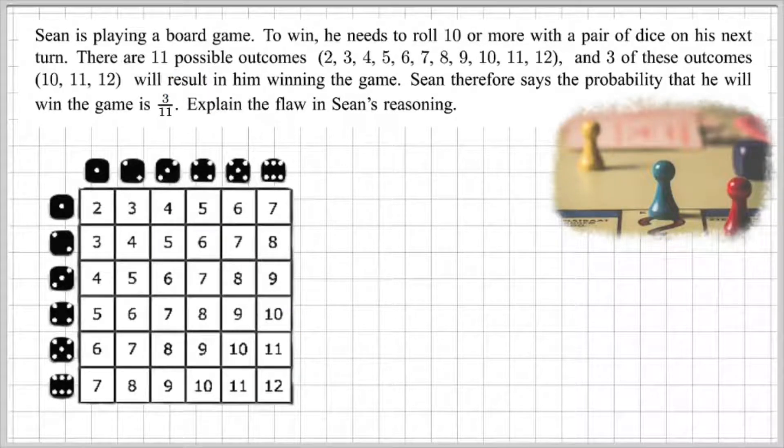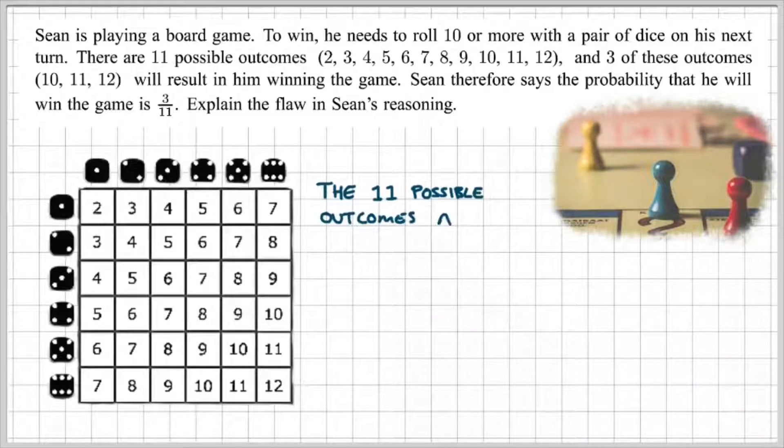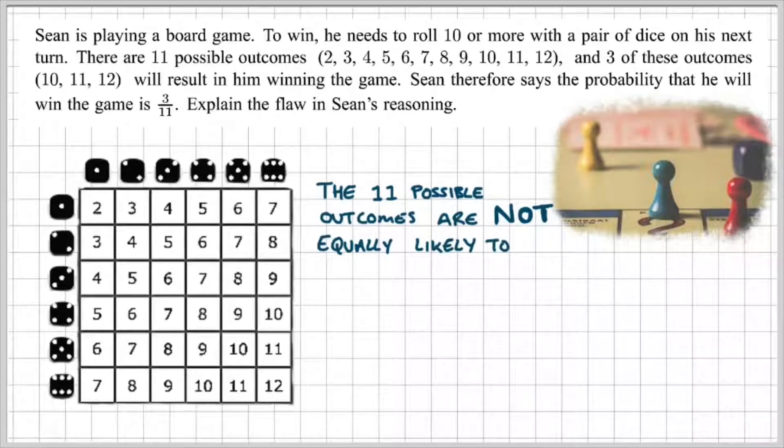But from these possible outcomes, there are 11 combinations. So you've got 2, 3, 4, 5, 6, 7, 8, 9, 10, 11, 12, and they repeat. However, the flaw in Sean's reasoning is because the 11 possible outcomes are not equally likely to occur.